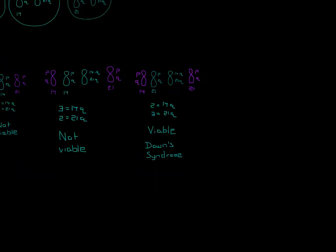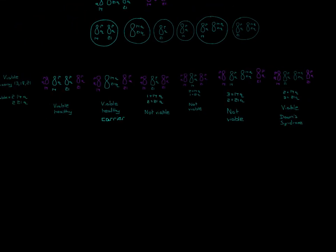Common test questions will ask how many children are viable. The answer is three out of six total are viable, so 50% are viable. Another question might ask: out of viable children, what is the probability of having Down syndrome? The answer wouldn't be one out of six — that's the probability out of all possibilities. If they ask out of viable children only, then it's one out of three viable children, so one-third.